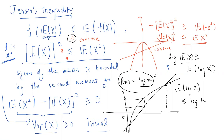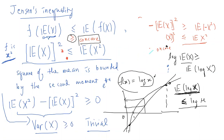Just by applying Jensen's inequality you get a bound for some random variable. The expectation E[log(X)] may be very hard to calculate depending on the distribution of X, but without doing any integration, applying the inequality already gives you an upper bound: E[log(X)] ≤ log(mu).